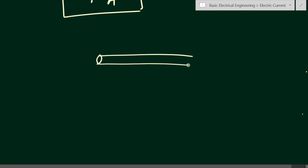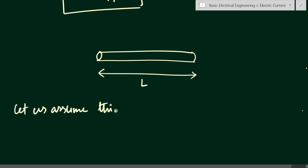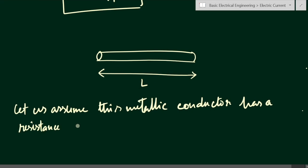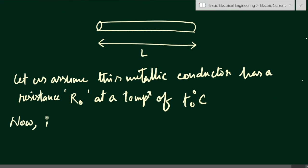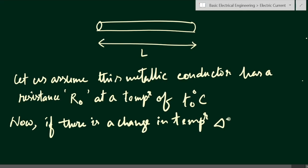We will consider some metallic conductor with length L. Let us assume this metallic conductor has a resistance R0 at a temperature of T0 degree Celsius. Now we will increase the temperature because we have to find out the temperature coefficient. If there is a change in temperature, that change is denoted by delta T, which is equal to T1 minus T0, where T1 is the new temperature and T0 was the previous temperature.